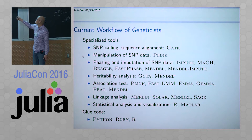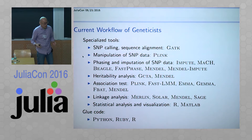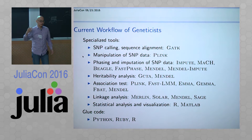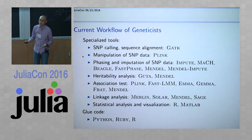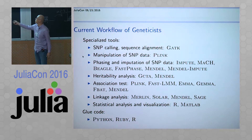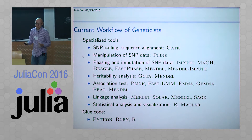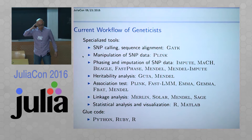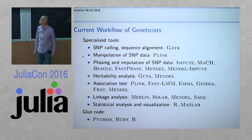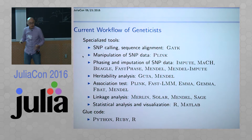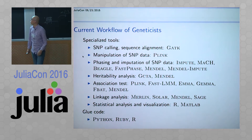These are the popular software people are using. After that, geneticists want to know, say you have a trait like height - how much variability in height is due to genetics. That's called heritability analysis. So they want to use software called GCTA or Mendel. And if you want to do an association test - that's what Kevin was talking about - you want to do a genome-wide association test. There are some softwares there; you have to read all those manuals, choose the one that fits your data, and learn how to use it.